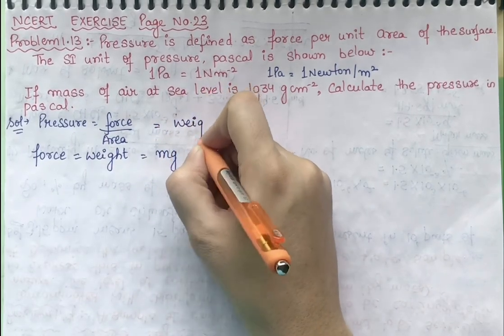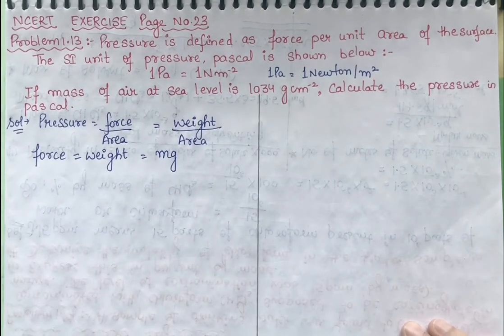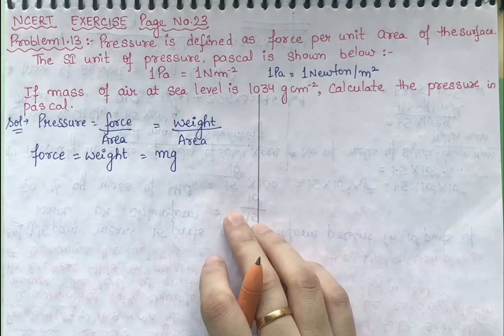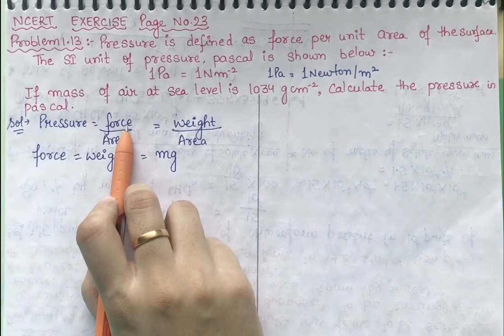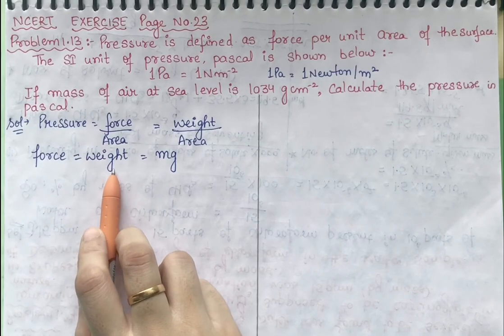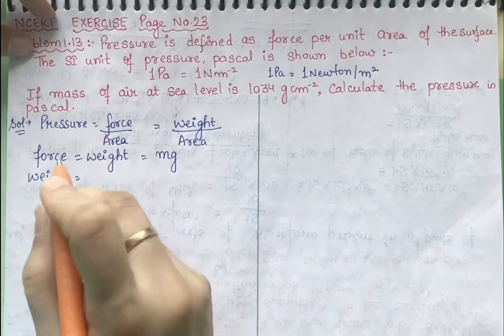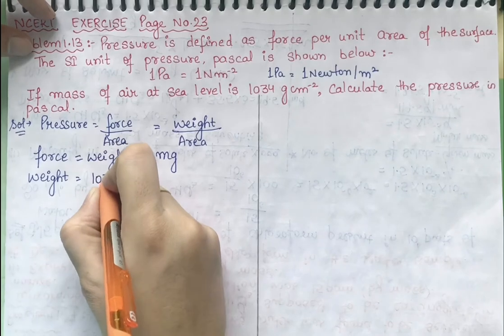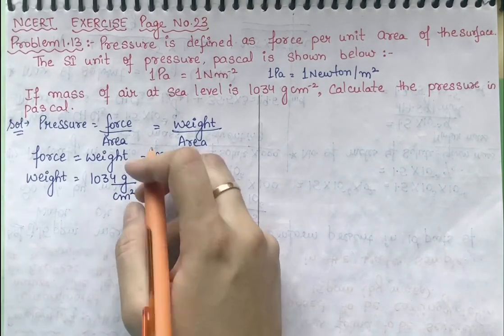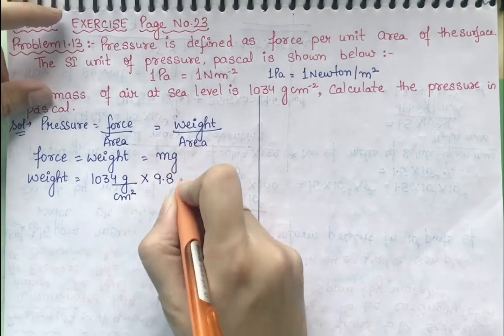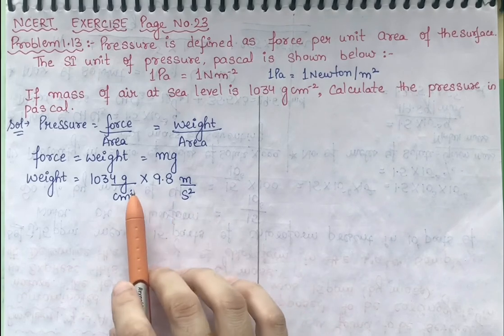So in the pressure formula I can write weight by area. Pressure equals force upon area, and force equals weight. Weight equals mass, which is 1034 gram per centimeter square, multiplied by gravity, which is 9.8 meter per second square. Now we have the actual values to work with.